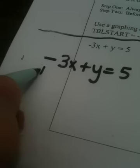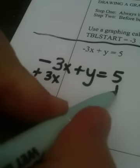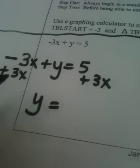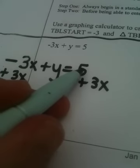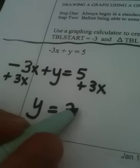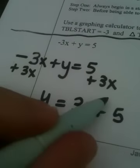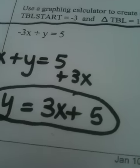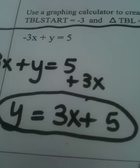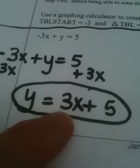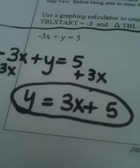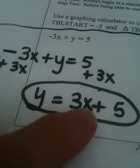To get y alone, we're going to add 3x to both sides of the equation, so I have y equals. Let's put it in the correct order, let's not write 5 plus 3x, let's write 3x plus 5, because hopefully you remember the form y equals mx plus b for a line. That's the correct form to have it in. 3 is the slope and 5 is the y-intercept.